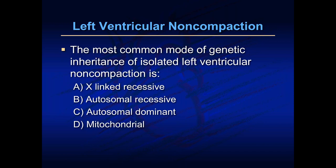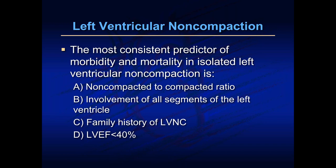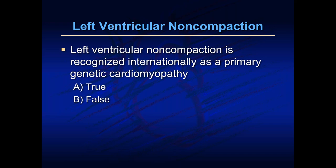The most consistent predictor of morbidity and mortality in LVNC is related to the non-compacted to compacted ratio, the involvement of segments of the left ventricle, a family history of LVNC, or an LV ejection fraction of less than 40%. And lastly, left ventricular non-compaction is recognized internationally as a primary genetic cardiomyopathy — true or false.